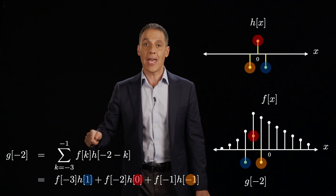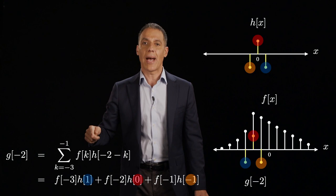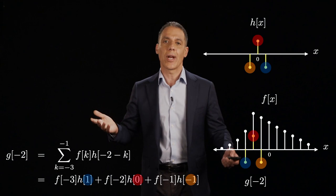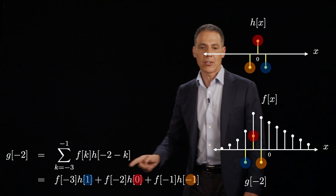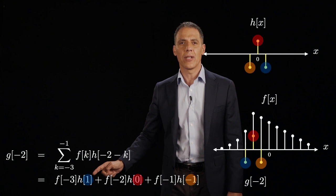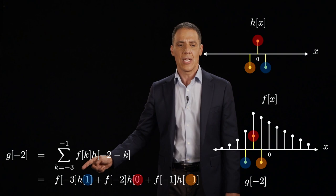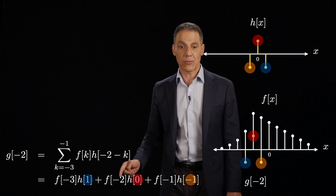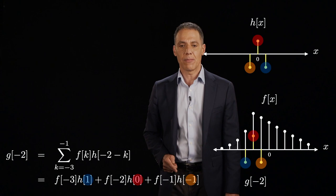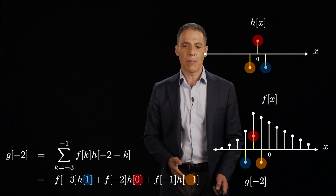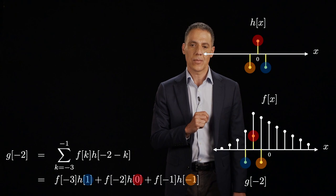So g of -2 is equal to the sum from -3 to -1 of f sub k, and k, of course, is the index on the sum here, times h of -2, that's the point that we're trying to evaluate, minus k. Let's write it out. What are we going to get here? We're going to get f of -3, that's the leftmost, times h of 1. That's the rightmost. Interesting. Why is there an inversion there? That's because of the minus sign in the convolution sum. It's flipping the impulse response. So f of -3 multiplies h of 1, f of -2 multiplies, by the way, that's what we're centering at, multiplies the center of the unit impulse response, h of 0, and f of -1 multiplies h of -1. I multiply those out and I sum everything up, and I get the response at g of -2.